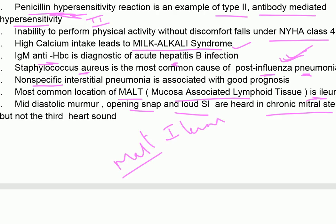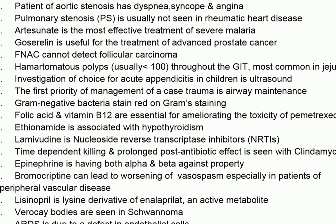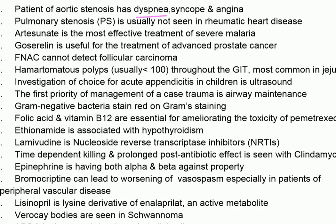In chronic mitral stenosis, mid-diastolic murmur, opening snap, and loud S1 are heard — but not the third heart sound. In aortic stenosis, the patient has dyspnea, syncope, and angina. Pulmonary stenosis is usually not seen in rheumatic heart disease, nor is tricuspid stenosis.